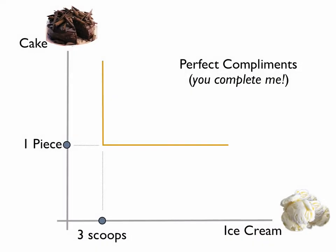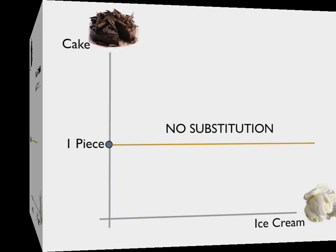In this case, we're talking about cake and ice cream. The consumers will only give up one piece of cake for three scoops of ice cream, meaning they're always going to consume it in that ratio. In this case, there's no substitution — the person just eats cake and is not interested in any ice cream.